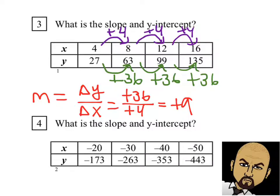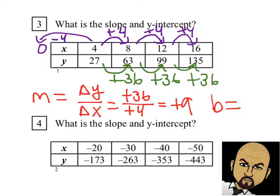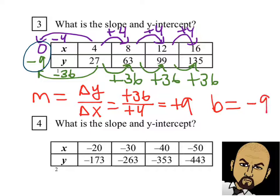Now let's figure out the y-intercept — this is the new thing. In order to find the y-intercept, we need to count down in our table. Remember, the y-intercept is the y value when x equals 0. So we subtract 4 from our x values to get back to 0, and correspondingly subtract 36 from our y values. So 27 minus 36 is negative 9. Our y-intercept, also called the initial value or starting point, is negative 9.